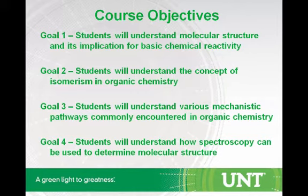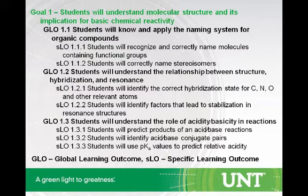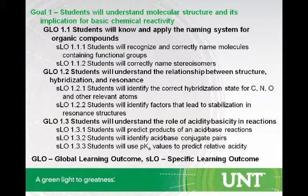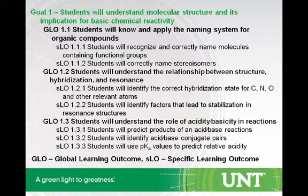Once the course goals have been written, we write global learning outcomes — GLOs. If students master each of the GLOs, that should be sufficient to obtain whatever goal you've set. These are still broad and can't be directly assessed. Then, under each global learning outcome, a very specific learning outcome — an SLO — is written. These are at the level where they can be assessed with test items. If students can attain the specific learning outcomes, it extrapolates to the global learning outcome, which extrapolates up to the goal level. These are somewhat fluid — you go in with a set of them, and they may change slightly over time, but I think the refinement is good.